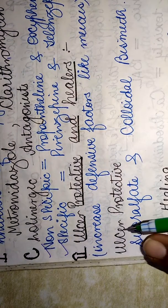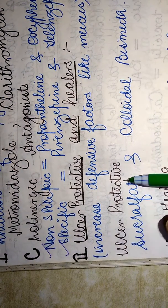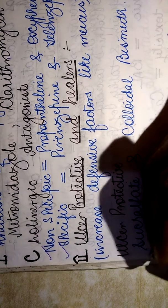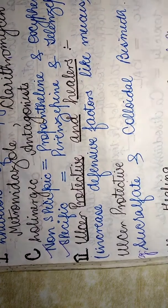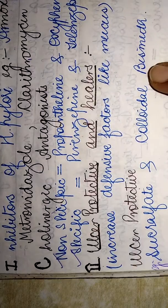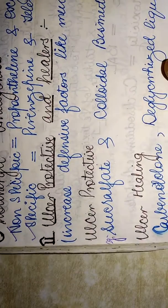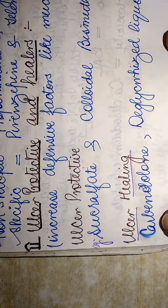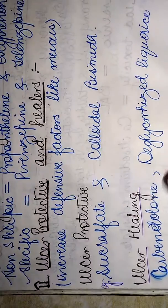The first category is ulcer protective, which includes examples of sucralfate and colloidal bismuth. Next, the ulcer healing drugs include carbenoxolone and deglycyrrhizinated licorice.